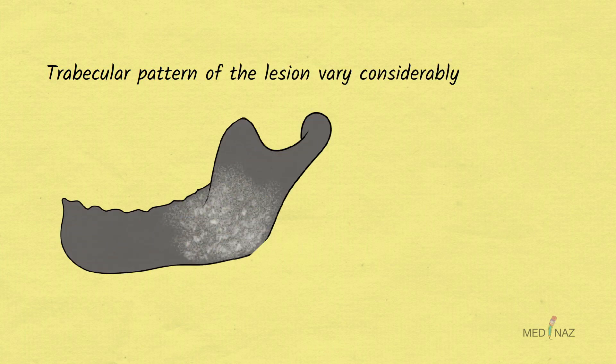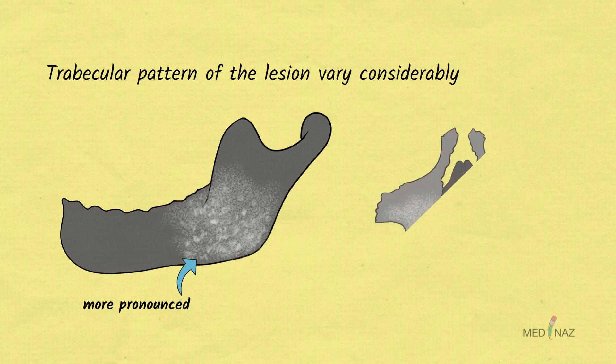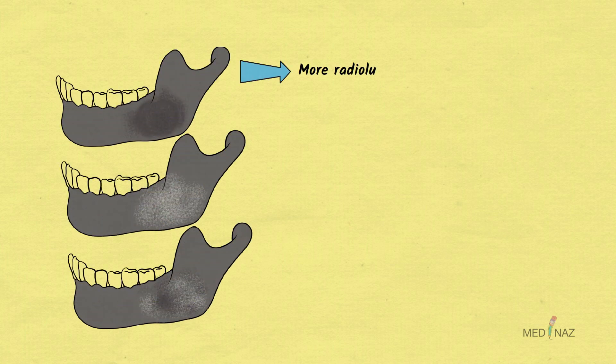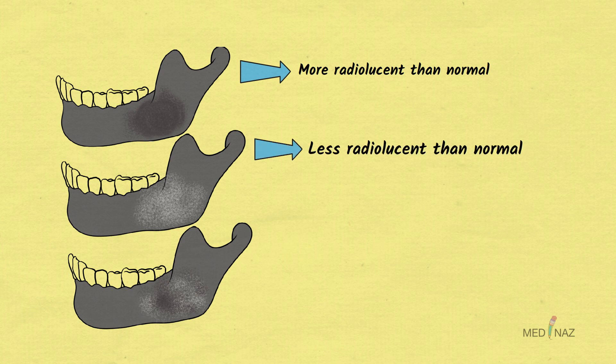Now, internal structures. Density and trabecular pattern of the lesion vary considerably. Variation is more pronounced in the mandible and more homogeneous in the maxilla. The internal aspect of bone is of three types: more radiolucent than normal, less radiolucent than normal, and a mixture of these two.